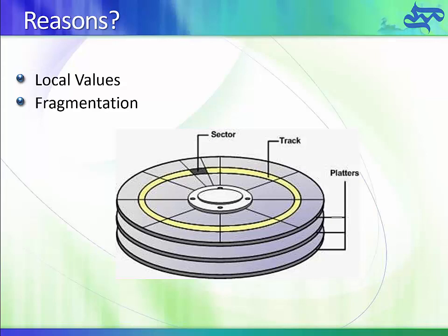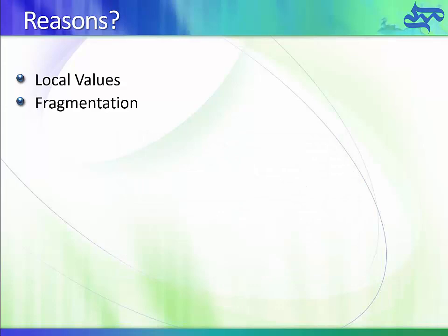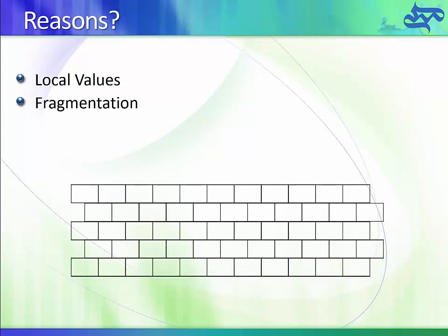This picture shows a hard disk drive with platters, tracks, and sectors. Whenever we want to store information in the Active Directory database, it gets written to the hard disk in units called blocks — very small parts of the hard disk used to store data. When we create a user account, we provide information like the account name, password, department, and description.